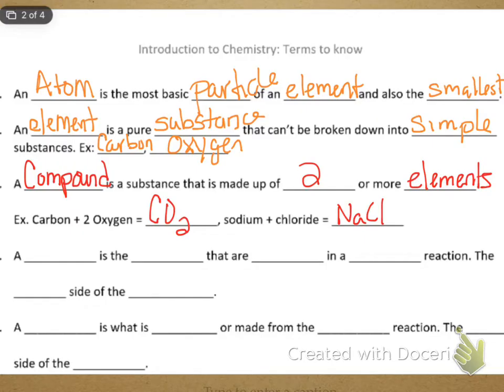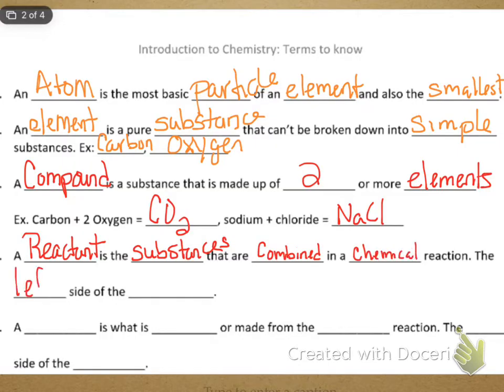Another term, a reactant. You know what a reactant is. We've talked about it with photosynthesis. A reactant is the substances that are combined in the chemical reaction. They're the left-hand side of the equation. In photosynthesis equation, they're carbon dioxide plus water plus sunlight. Those are the reactants.